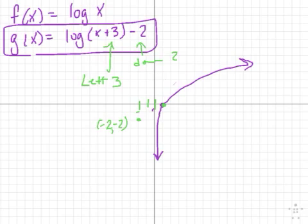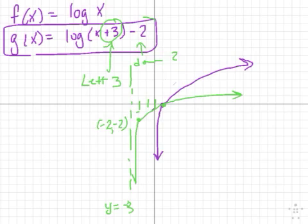And now what's my new asymptote? Where did my asymptote shift? My asymptote shifted left 3 as well. So instead of being at 0, at x equals 0, my asymptote is right there. So my asymptote is y equals negative 3, because I shifted it left 3. And my graph looks something like that.